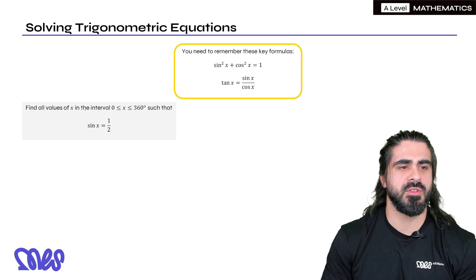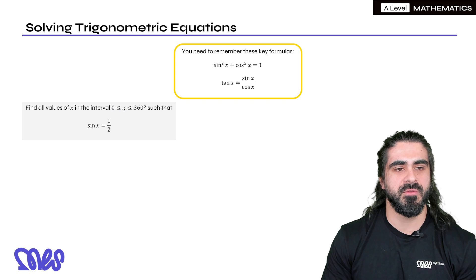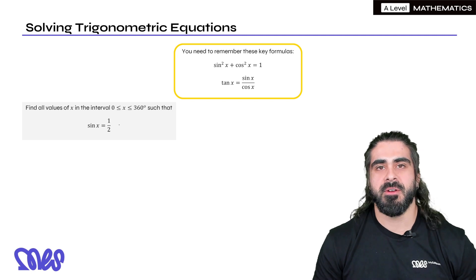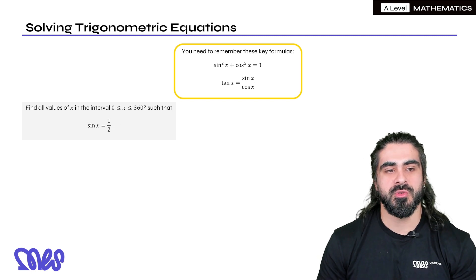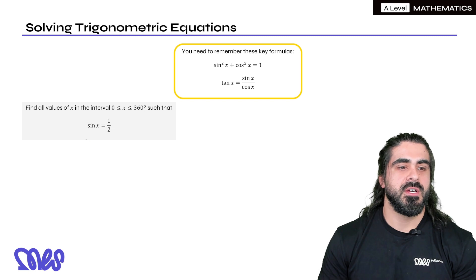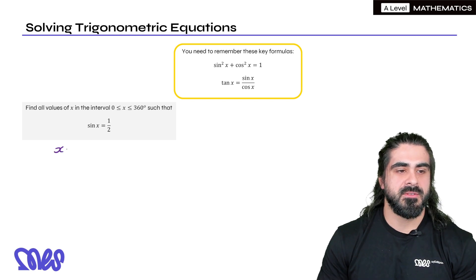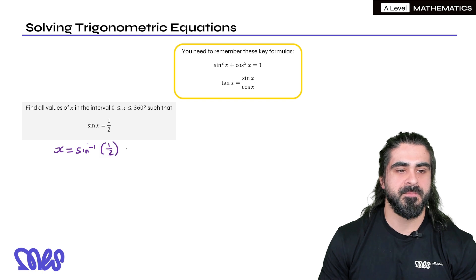So how do we use some of these for solving? The Pythagorean identity, I'm going to do in another episode, so make sure you remember that. But tan x is sine x over cos x, we are going to use today. So for example, find all the values of x in the interval between 0 and 360 such that sine x is 1 half. Now after your experiences with the sine and cosine rule, we know we should do inverse sine.